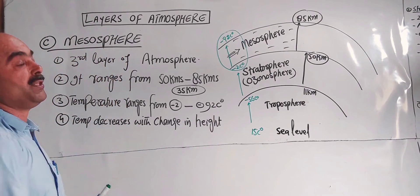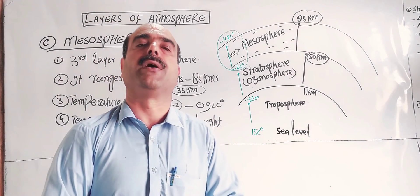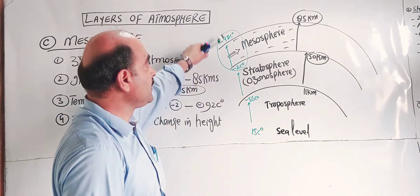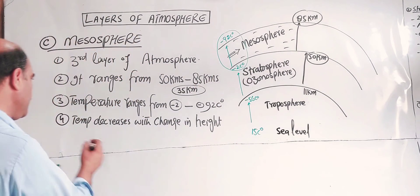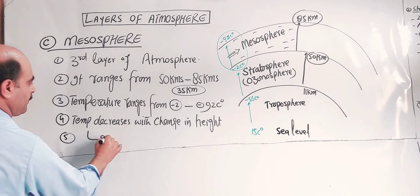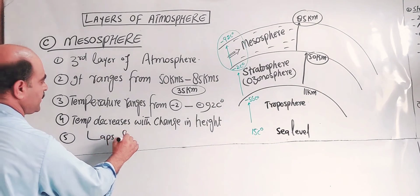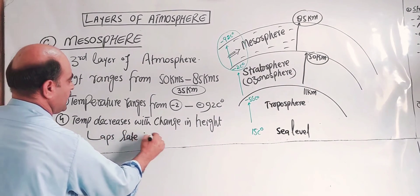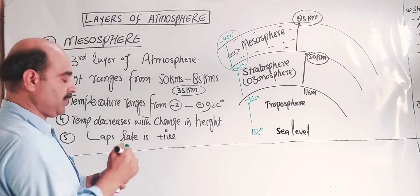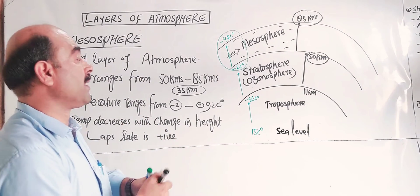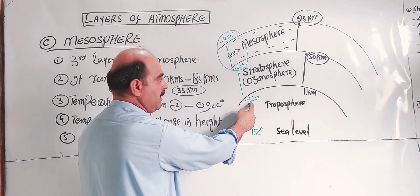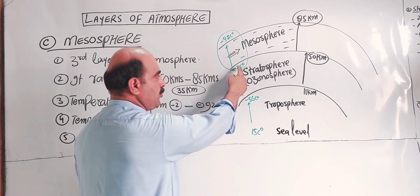The decrease in temperature with change in height is described by the lapse rate. In the mesosphere, the lapse rate is positive — meaning temperature decreases as altitude increases.